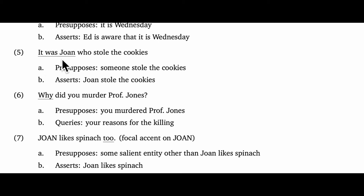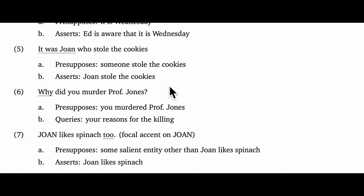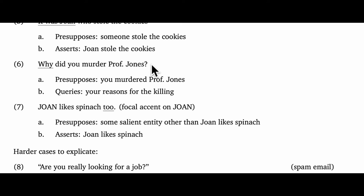This next example is a bit trickier. The "it was" exclamation, as in "it was Joan," is what linguists call a cleft construction, and quite generally clefts carry presuppositions. In the sentence "it was Joan who stole the cookies," we have a presupposition that someone stole the cookies and an assertion that Joan is the culprit. I think why-questions generally presuppose their clausal content. If you're a defendant in court and the lawyer asks you "why did you murder Professor Jones," you should refuse to answer — the question presupposes that you're guilty of murder and simply queries your reasons.